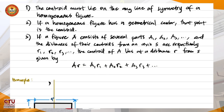Number three: if a figure A consists of several parts A1, A2, A3, and the distances of their centroids from an axis S are respectively R1, R2, R3, and so on, the centroid of A lies at distance R from S given by: A·R = A1·R1 + A2·R2 + A3·R3 + ... That is, the total area times the distance of the centroid from a reference axis equals the sum of each component area times its distance to that reference axis.